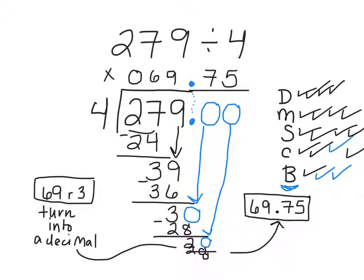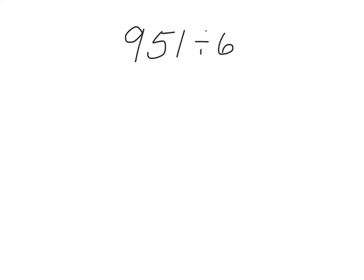You can stop here if you feel like you have the hang of it, or you can go on to the next problem, which is another practice problem from your practice packet, from your practice pages. Here's our next problem: 951 divided by 6. A reminder that you need to be working along in your math notebook or your practice pages showing your work from this video. So let's set this up. We have 951, we're going to divide that by 6. We're going to write down DMSCB to help us keep track. And here we go.